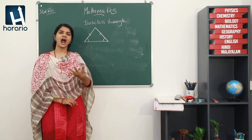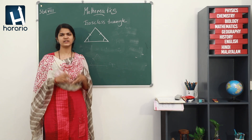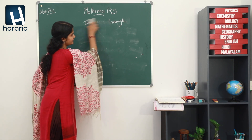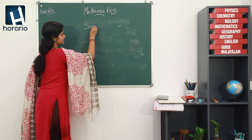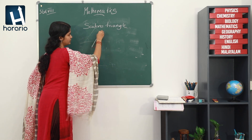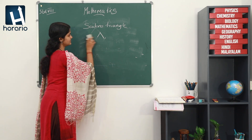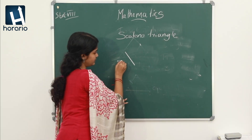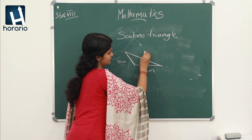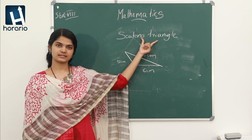Then what about when three sides are unequal? A triangle with three sides unequal — what do we call that particular triangle? Have you heard about scalene triangle? A scalene triangle is a triangle with three sides unequal. For example, we can draw it with sides 5 centimetres, 6 centimetres, and 8 centimetres. Then the sides are unequal, so we say it is a scalene triangle.